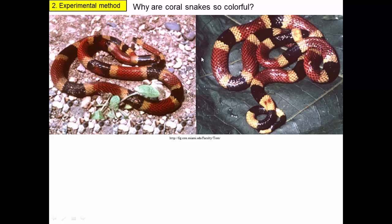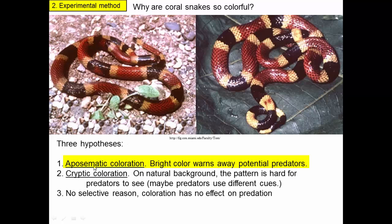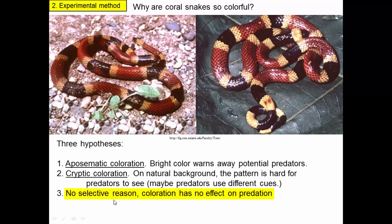Here are three hypotheses. First, this color pattern could be aposematic coloration — a bright color that warns away potential predators. Maybe this snake is poisonous, and the color pattern acts as a warning so predators will stay away. Or maybe this is cryptic coloration: on a natural background, this pattern is hard for predators to see. For us, these snakes stick out like sore thumbs, but maybe predators that attack snakes use different cues, causing the snakes to blend in. Then we want a third hypothesis that maybe there's no selective reason — maybe the color pattern has nothing to do with predation, but rather sexual selection or a byproduct of development or selection for something else.